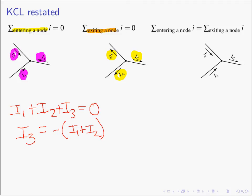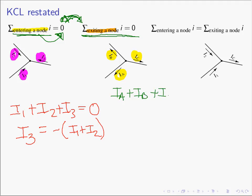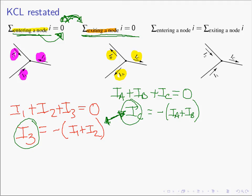Looking at both versions of KCL: the current entering a node is simply the negative of the current exiting the node. Moving all currents to the other side of the equation gives us the sum of the currents exiting a node equals zero. The only difference between the two versions is which side of the equal sign the currents are placed on. So iA plus iB plus iC, all exiting the node, equals zero — and iC equals negative of iA plus iB. These are the same currents, just using the other name.